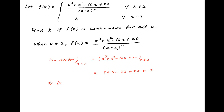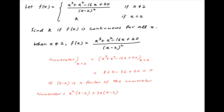Therefore, x minus 2 is a factor of the numerator. Therefore, the numerator can be expressed as x² times (x − 2) plus 3x times (x − 2) minus 10 times (x − 2).